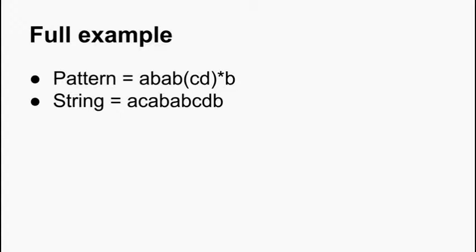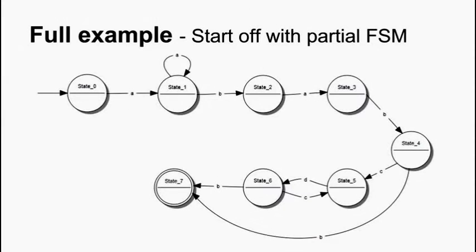So, quick example now. So we've got the pattern a b a b c d starred b. And we want to match it with a string a c a b a b c d b. So first off, start constructing the finite state machine. Just break the pattern down into different parts first. Start with first four states, just the a b a b part of the pattern. Simple enough. Then you've got the c d starred part. So first you read in a c from state four. Then you need to look for a d. And after you've read in a d, you can either read in a b to go to the end, or if there's another c you can go back to state five. Because you can have any number of c d's before reading that final b. And of course, as you can have zero because it's a star, then from state four you also need a transition going to the final state for b in case there is no c d.